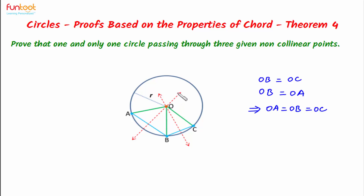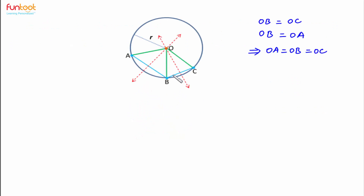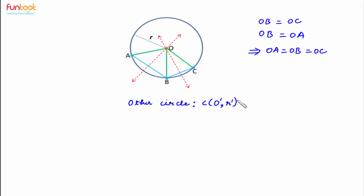And the circle will be something like this. Now the second thing which we have to prove is that there is one and only one circle which passes through these three points A, B and C. Let us take the help of the contradiction method. Let us suppose there is another circle with center O′ and radius R′ which passes through these three points A, B and C.